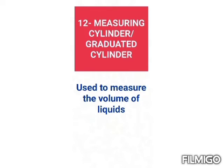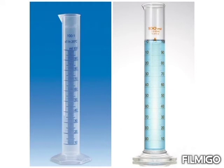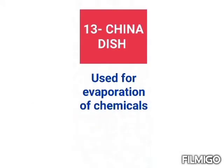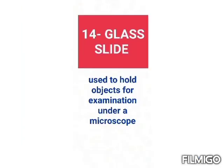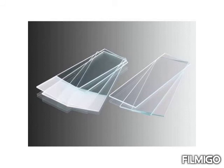Next is the measuring cylinder or graduated cylinder, which has graduations and is used to measure the volume of liquid. Next is the china dish, which is used for evaporation or mixing of chemicals. Next is the glass slide, which is used to hold objects for examination under a microscope.